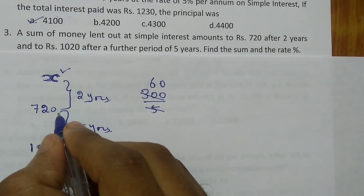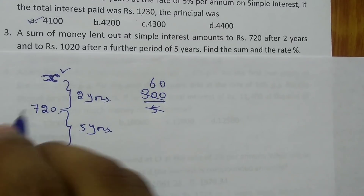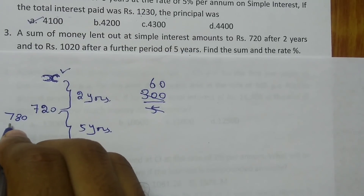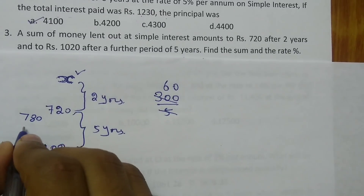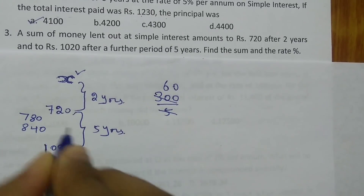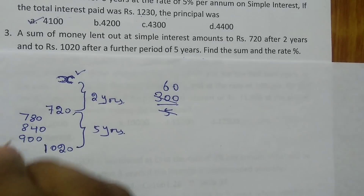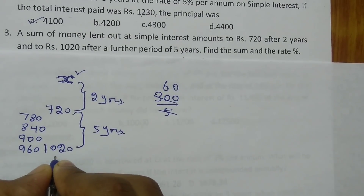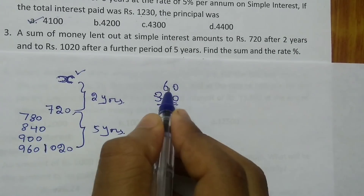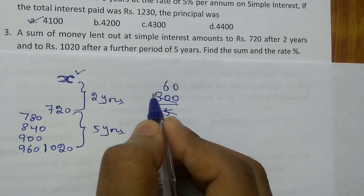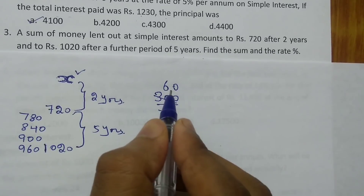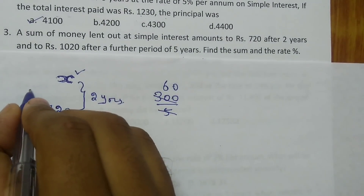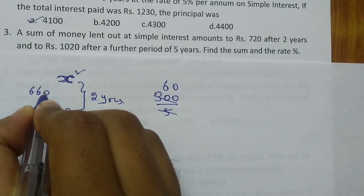At the end of year 2 the amount is Rs.720. Adding Rs.60 each year: end of year 3 is Rs.780, year 4 is Rs.840, year 5 is Rs.900, year 6 is Rs.960, and year 7 is Rs.1020. Going backwards from Rs.720, subtracting Rs.60 gives Rs.660 at the end of year 1.